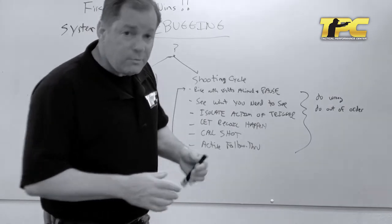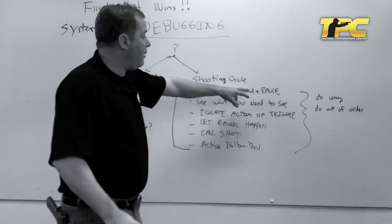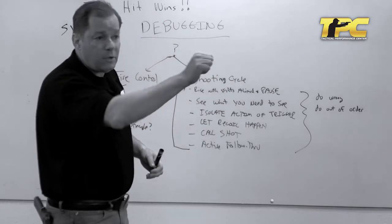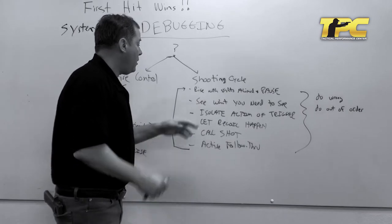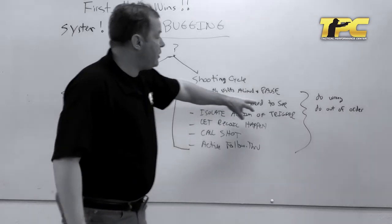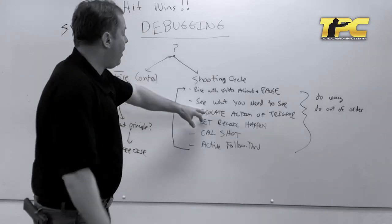It starts with rising with sights aligned and pausing, or if you're in the middle of shooting it might be moving over to another target with sights aligned and pausing. Then you see what you need to see. Once you see what you need to see, you isolate the action of the trigger.